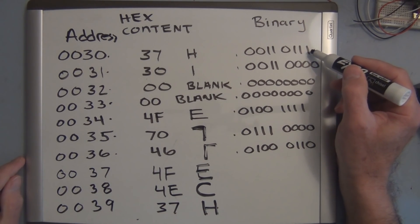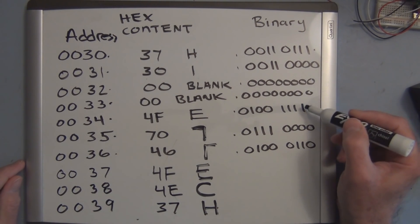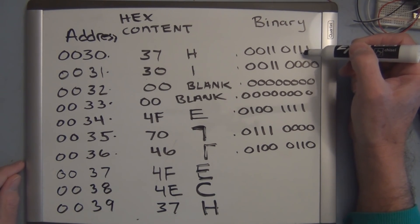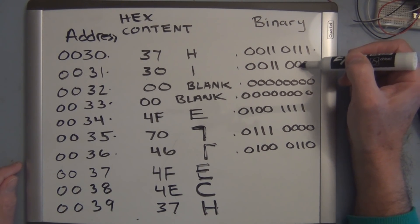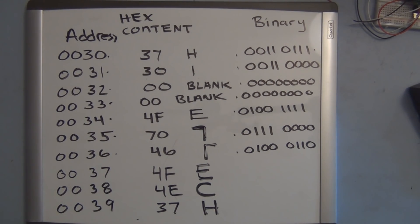And here are some of the equivalent binary numbers that you would have to enter in. You could see that it would definitely be a lot more work, a lot more cumbersome and prone to error, as opposed to entering in the hexadecimal equivalent of those binary numbers.